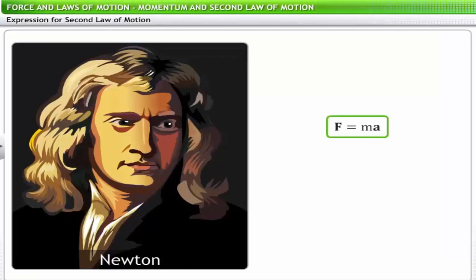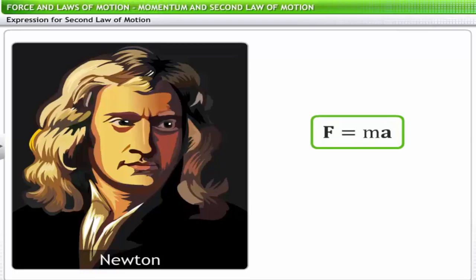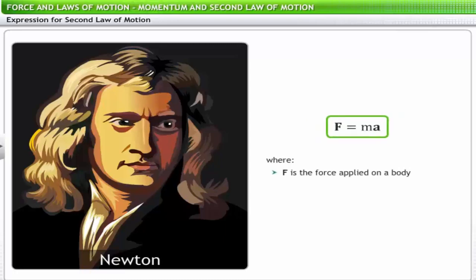Newton's second law of motion can be expressed mathematically as F equals ma, where F is the force supplied on a body (measured in newtons in the SI system and in dynes in the CGS system), m is the mass of the body, and a is the acceleration produced in the body.